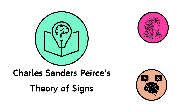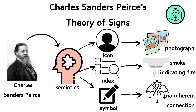Charles Sanders Peirce's Theory of Signs. Charles Sanders Peirce, an American philosopher and logician, developed a comprehensive theory of signs that he called semiotics. Unlike Saussure, Peirce's model includes three categories of signs: icon, index, and symbol. An icon refers to signs that resemble what they signify, such as a photograph that visually represents its subject.